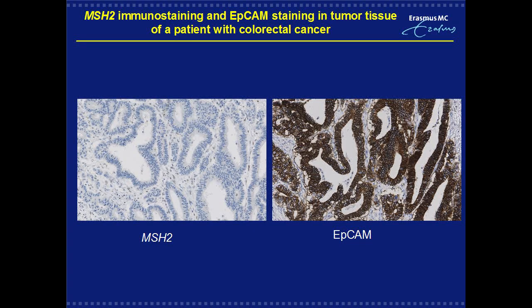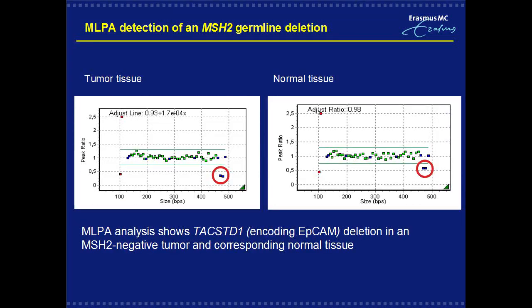In one male patient with colorectal cancer at age 64, absence of MSH2 protein was found to be due to MSH2 promoter hypermethylation, resulting from a deletion in the EPCAM gene. Here you can see the results of MSH2 staining and staining for EPCAM antibody, and additional MLPA analysis showing the specific EPCAM deletion in normal and tumor tissue.